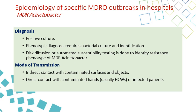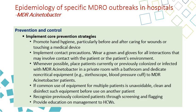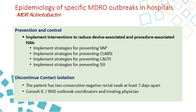Transmission is direct and indirect — direct through the contaminated hands of healthcare workers, and indirect by touching contaminated surfaces and objects. For prevention of MDR Acinetobacter, measures include hand hygiene, contact precautions, whenever possible a private room with private bathroom, and dedicated non-critical equipment. If common-use equipment is unavoidable, clean and disinfect between patients, recognize previously colonized patients by flagging in the system, and provide education for healthcare workers. Preventive measures also include bundles for VAP, CLABSI, CAUTI, and SSI. Contact isolation for MDR Acinetobacter can be discontinued when two consecutive negative rectal swabs are obtained seven days apart.